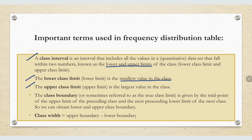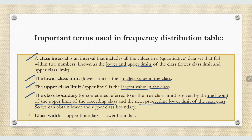The upper class limit is the largest value in the class. The class boundary, sometimes referred to as the true class limit, is given by the midpoint of the upper limit of the preceding class and the lower limit of the next class. We can obtain lower and upper class boundaries. Class width equals upper boundary minus lower boundary.